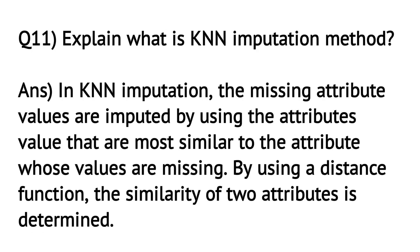Explain what is the KNN imputation method. In KNN imputation, the missing attribute values are imputed by using the attribute values that are most similar to the attribute whose values are missing. The similarity of two attributes is determined by using a distance function.